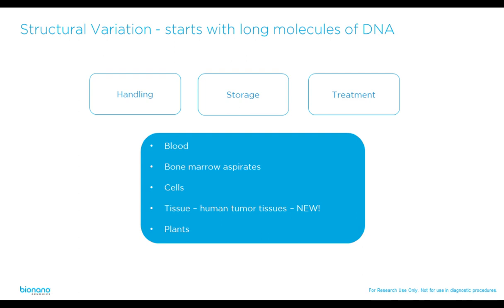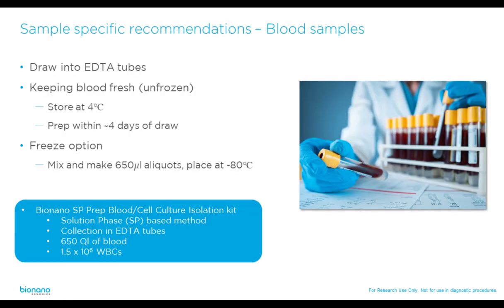Here are two tubes with black magnetic disks in them. The DNA precipitates out of solution and binds magnetically to the disk, creating white wisps attached to the disk — resembling cobwebs. It can all be washed as one unit and then transferred to a new clean tube. Sample types currently supported include whole blood, bone marrow aspirate, cultured cells, tissue using SP, and plants using agarose plug-based workflows.